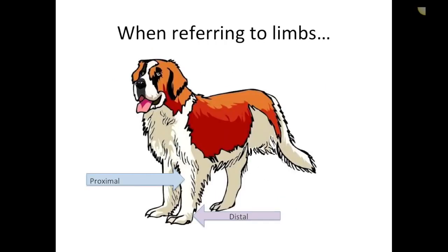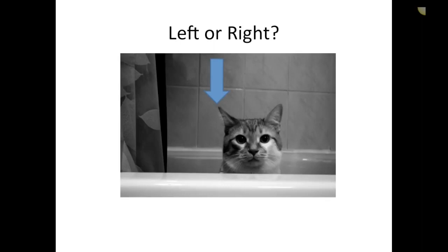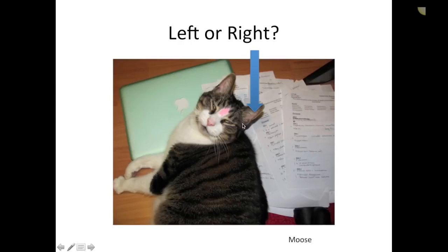Remember that proximal and distal specifically refer to limbs only. When looking at animals, we always remember that they get their own left and right — we don't mirror ourselves onto them. So if I'm looking at the table and put my right hand down, that's the right side of the table, whereas if it's an animal, they have their own left and right. Looking at a cat face-on, the ear I'm pointing to is its right ear.